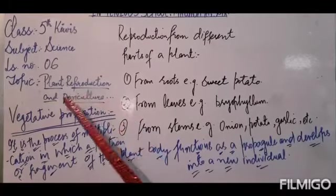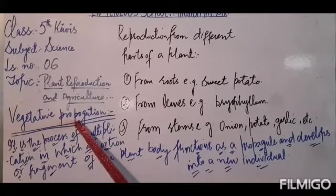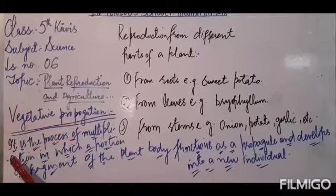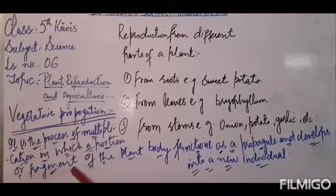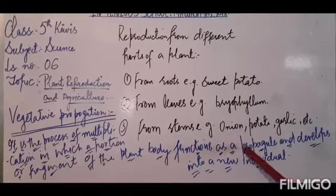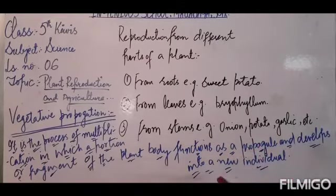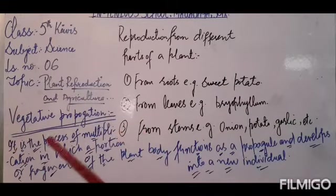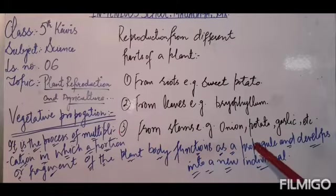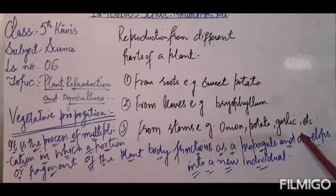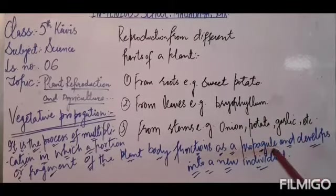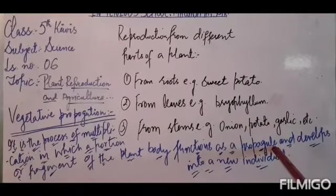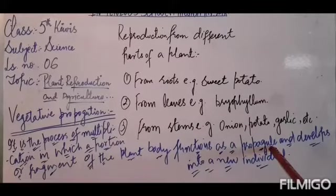So the process in which a new plant is reproduced from the different parts of a parent body is known as vegetative propagation. Vegetative propagation is the process of multiplication in which a portion or fragment of the plant body functions as a propagule and develops into a new individual. Now, what is a propagule? A propagule is the structure present on the parent body that gives rise to a new plant.